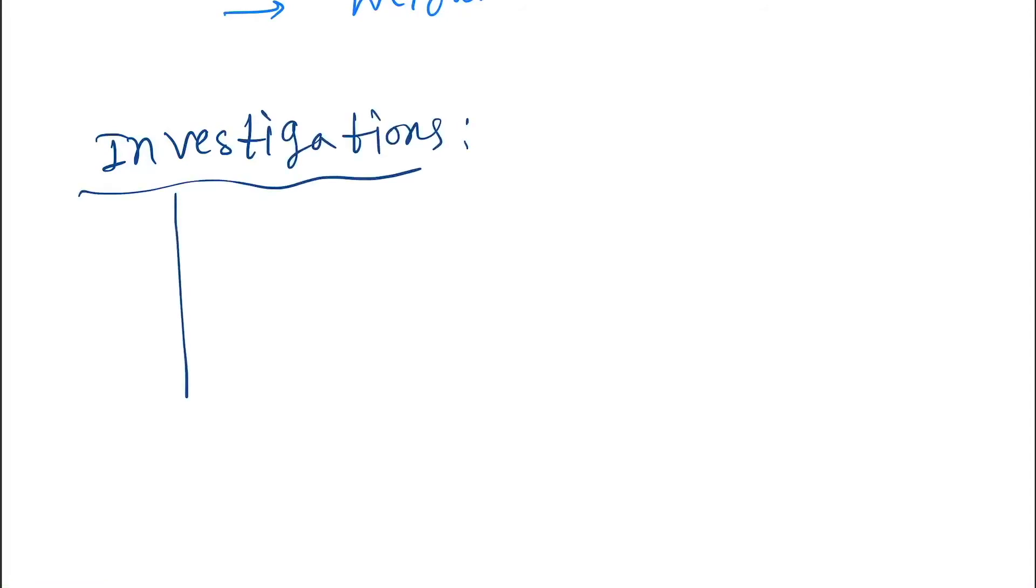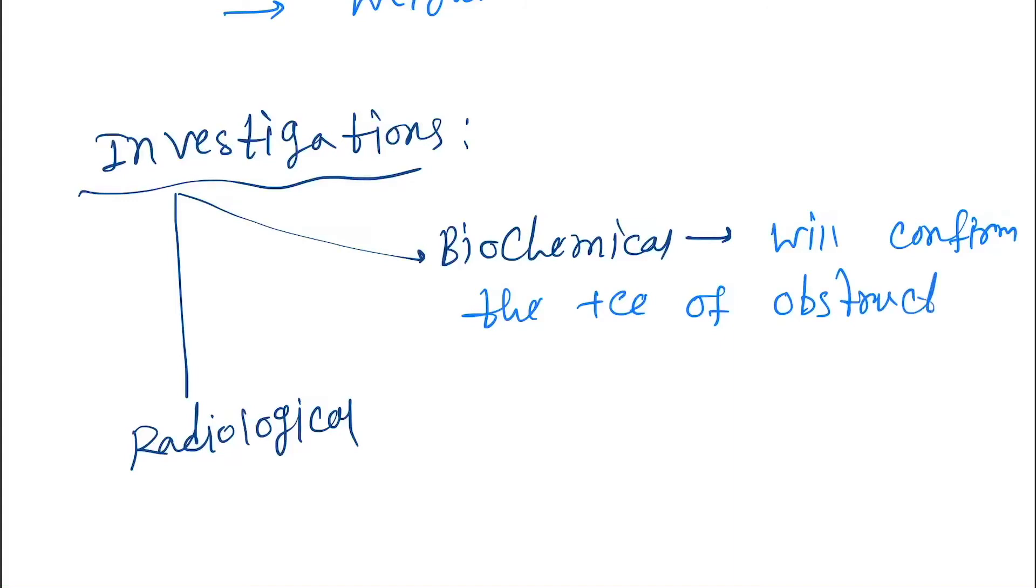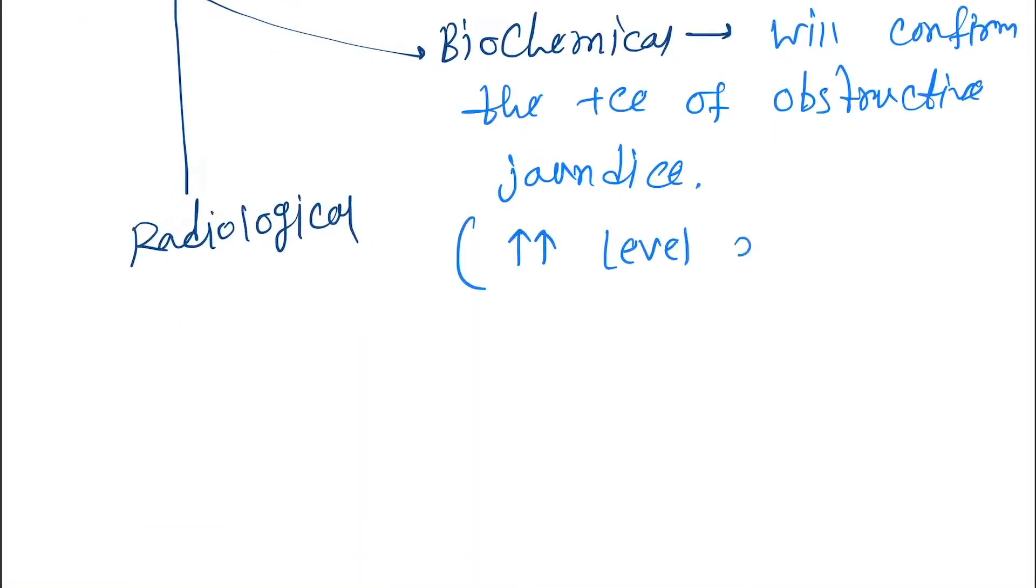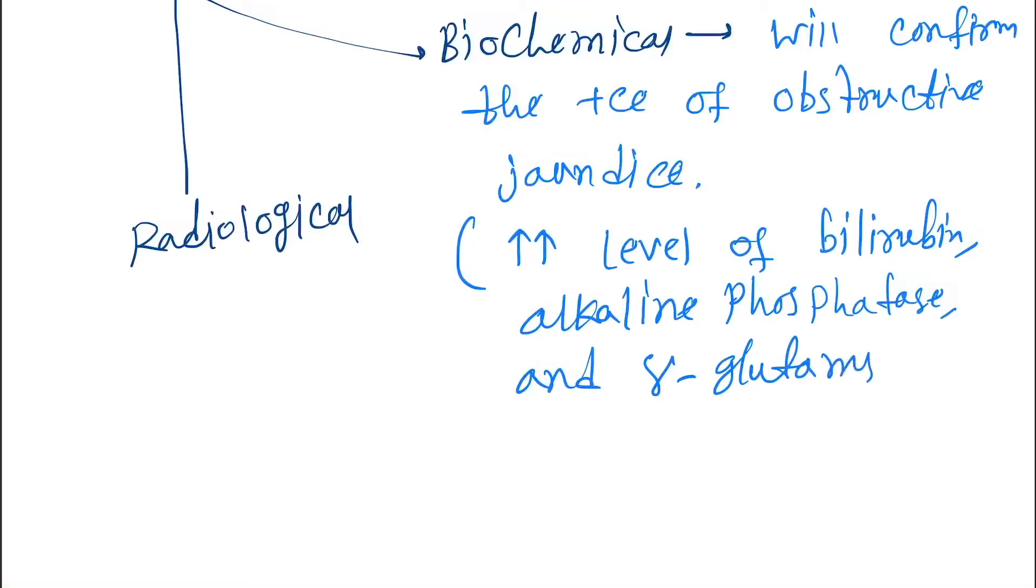Mainly two types of investigations are done: biochemical and radiological. Biochemical will confirm the presence of obstructive jaundice. We will see increased level of bilirubin, alkaline phosphatase, and gamma-glutamyl transferase. Under radiological, we will do ultrasonography, MDCT (multi-detector CT), and MRI or MRCP.